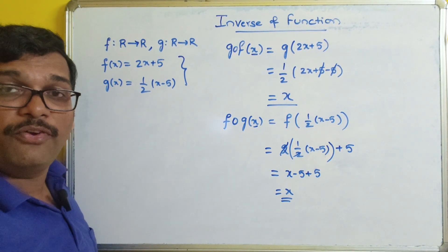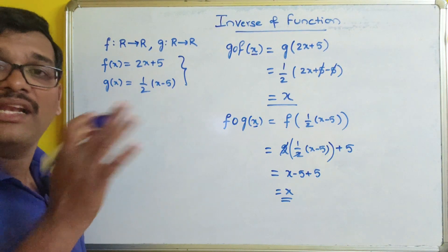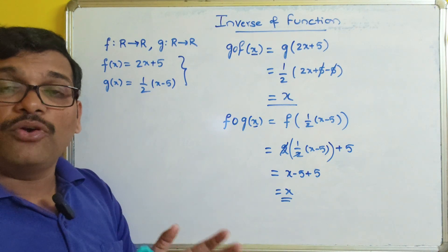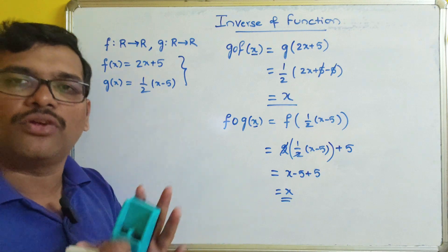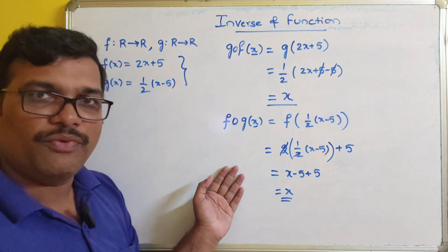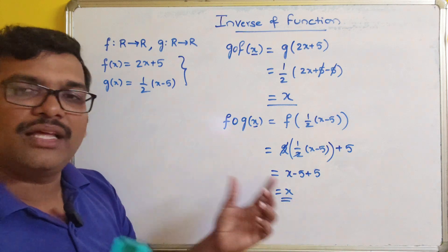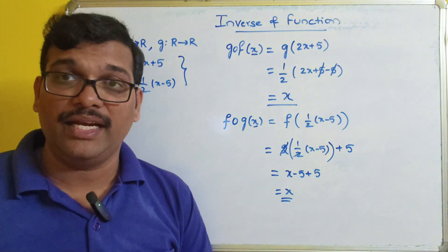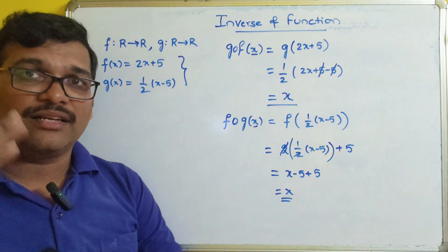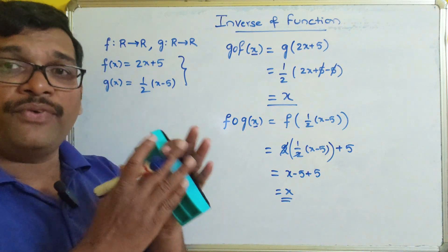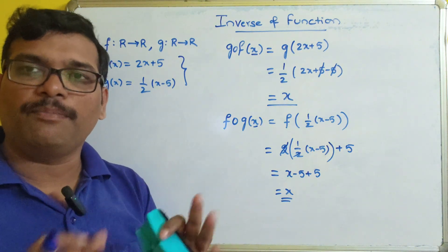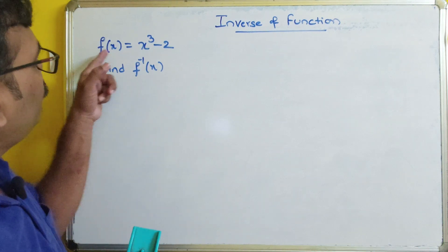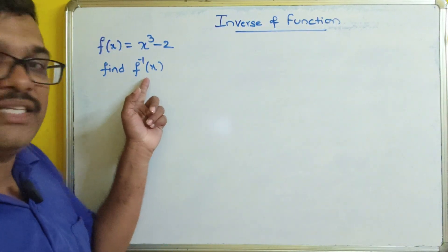In that question they were not asking us to find the inverse — they were asking us to check whether g is the inverse of f. In such a case we need to prove it by computing both compositions and confirming we get the identity function, meaning whatever input we take, the same output should result. Now we move to Case 2, where one function is given and we need to find its inverse.